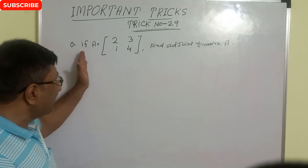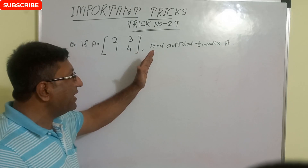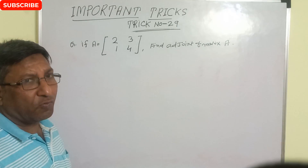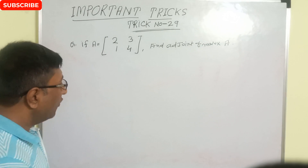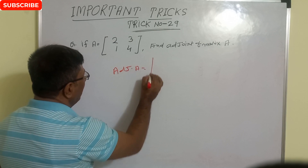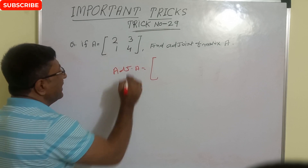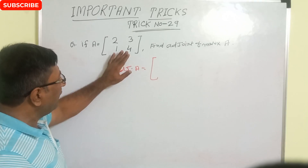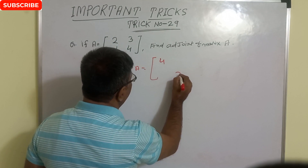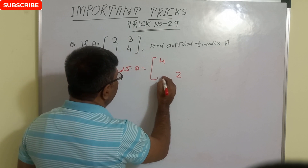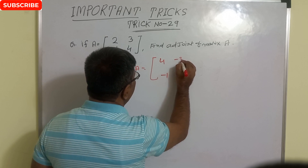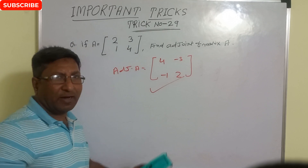If matrix A equals [2, 3; 1, 4], find the adjoint of matrix A. Very simple technique for finding the adjoint of a 2×2 matrix: adjoint of A equals — first interchange the diagonal elements, so this becomes 4 and 2. Now change the sign of the secondary diagonal: minus 3 and minus 1. This is the correct answer.